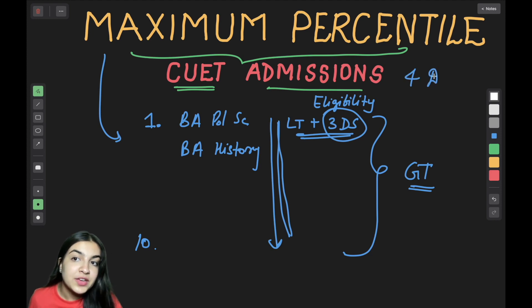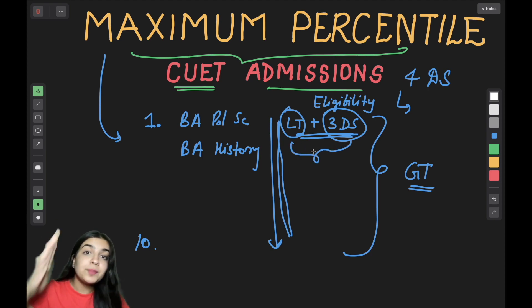If you have four domain-specific subjects with you, do them well. Because you never know which one can work out through luck. You might expect that physical education will get you better results than political science. So the best of three counts and the language test counts. When you add these numbers, you will get a percentile, and then you will know whether you qualify for specific courses or not.